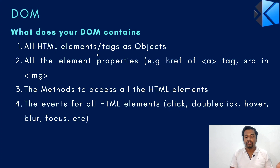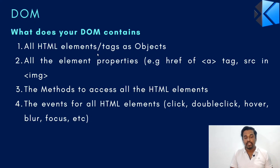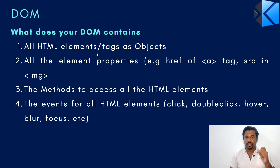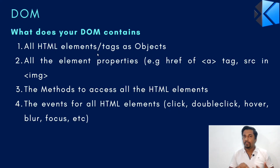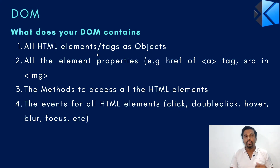All HTML element properties are also stored — for example, the image 'src' attribute, classes, IDs, and the href of an anchor tag — all these attributes are converted into objects and stored in your DOM. All the methods, events, and functions that you write in JavaScript are also converted into objects and rendered into your DOM.